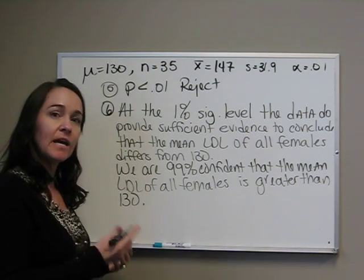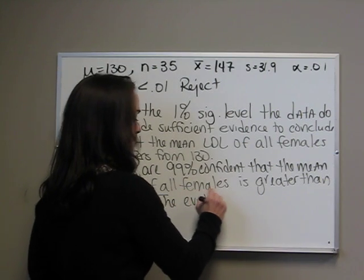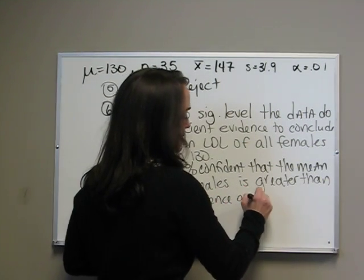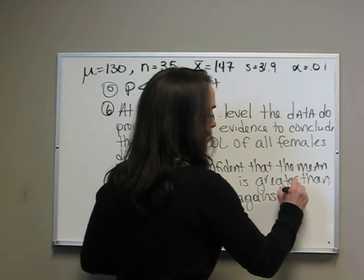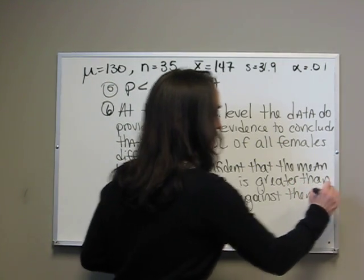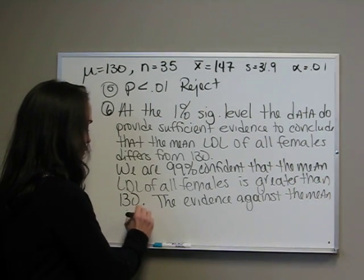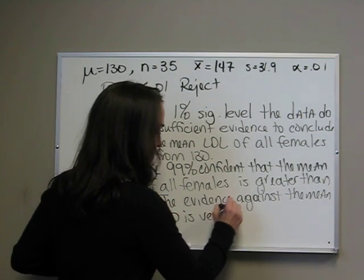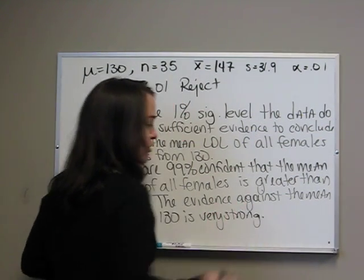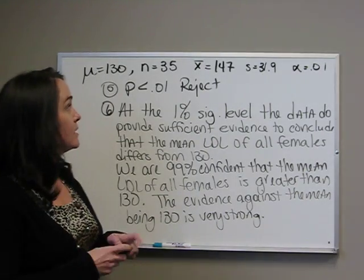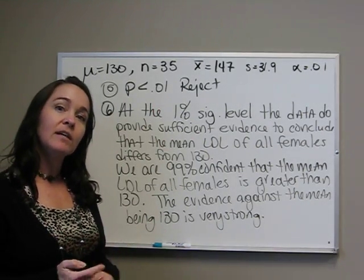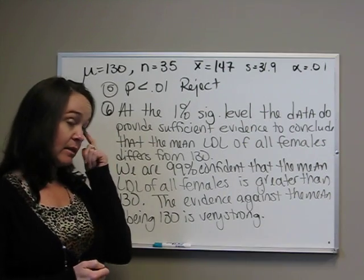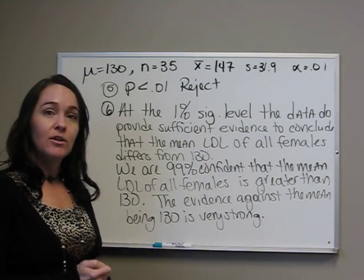Third sentence is the evidence. The evidence against the mean being 130 is very strong. And we know it's very strong because our p-value is less than .01. So on our p-value evidence chart that we looked at, we can see that it's very strong.